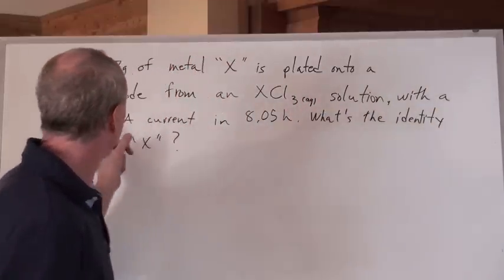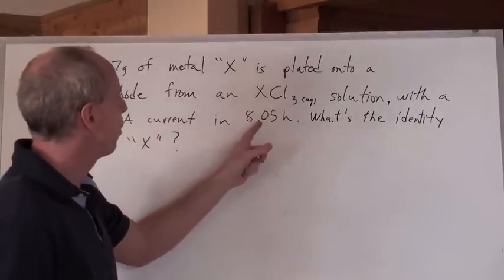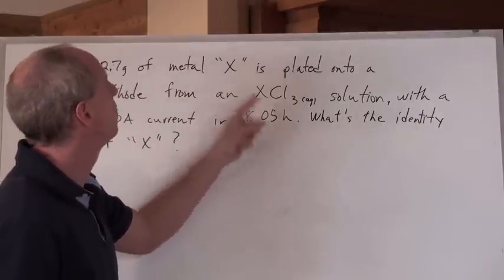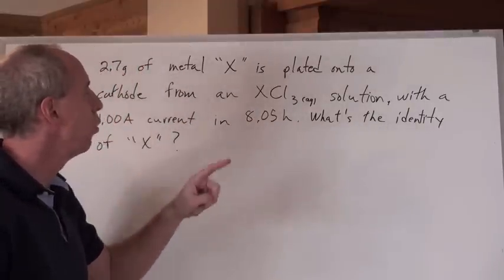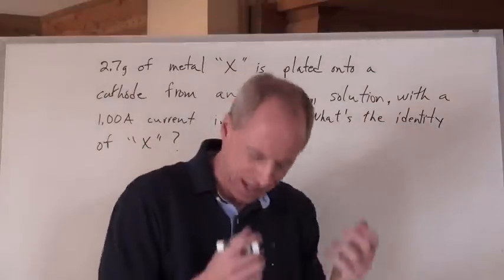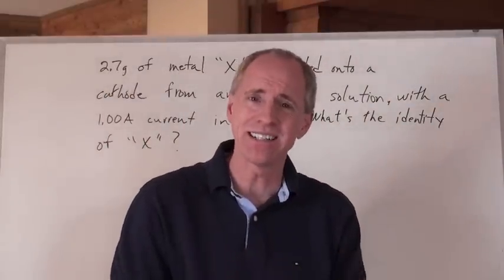And the current of 1 amp is run for 8.05 hours to be able to get that quantity. What's the identity of metal X? What's the identity of it?